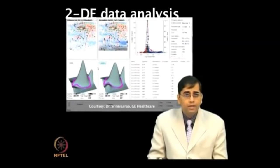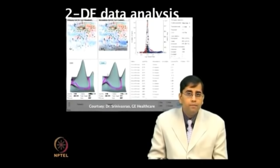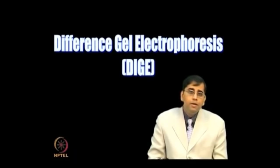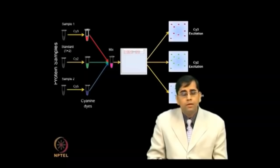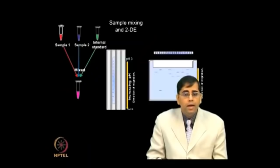Various information regarding spots — such as their area, volume, intensity, and statistical parameters such as standard deviations — can also be calculated. Two-dimensional electrophoresis has high resolving power, but has several limitations such as staining artifacts and reproducibility issues in gel-to-gel comparison.